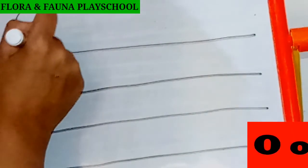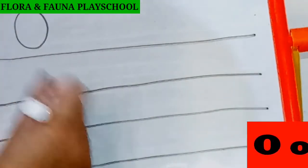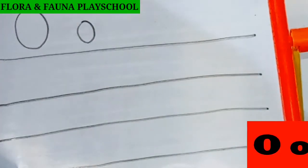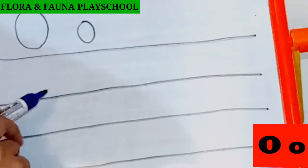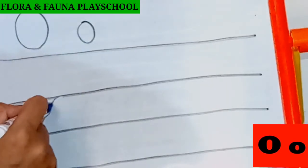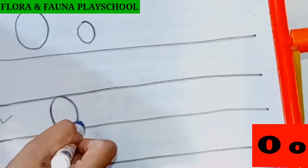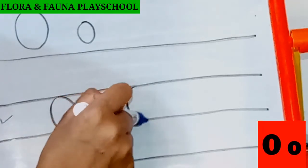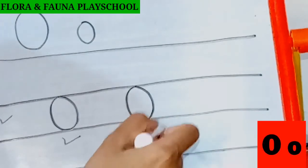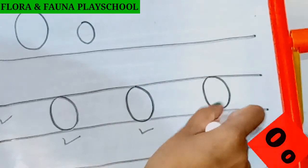We know how to write capital letter O, right? Small letter O is making a small circle. You will be writing small letter O in the middle line. Draw a small circle in the middle row — this is O, very simple. O is egg-shaped.